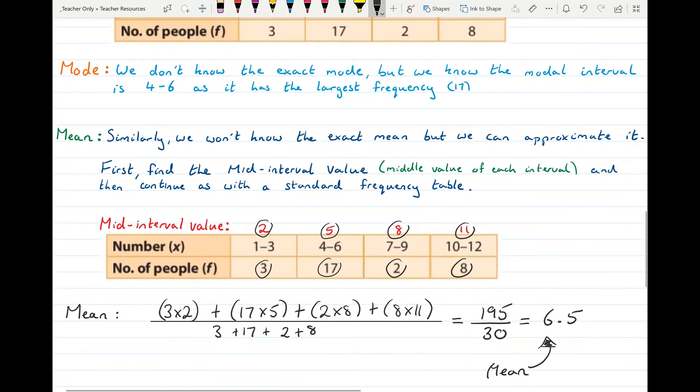So the mean of this grouped frequency table is approximately 6.5. That's frequency tables and grouped frequency tables, also called frequency distributions from time to time. I hope you found that useful.